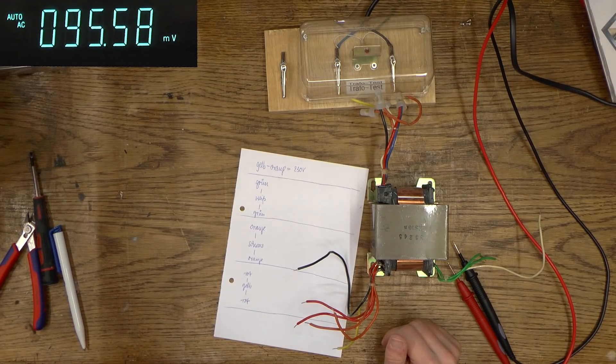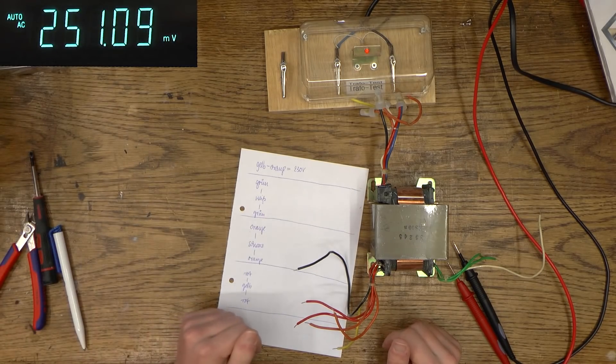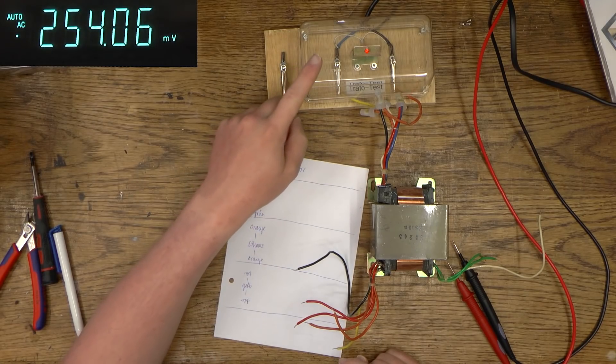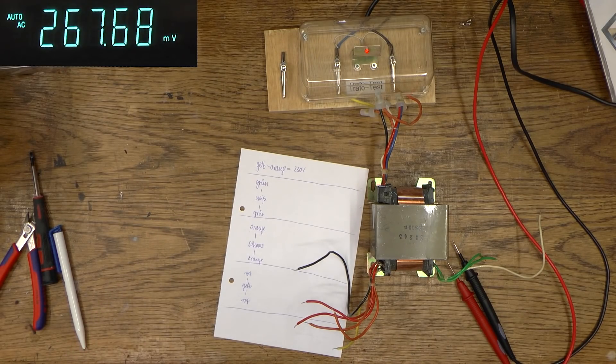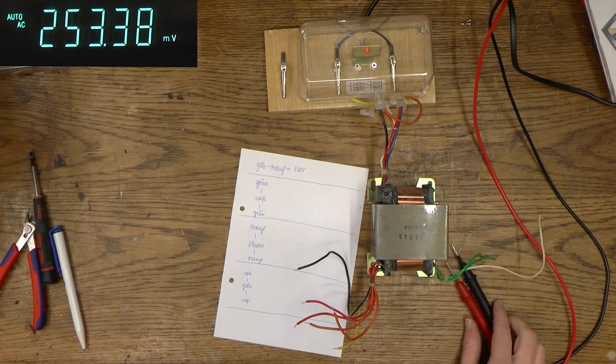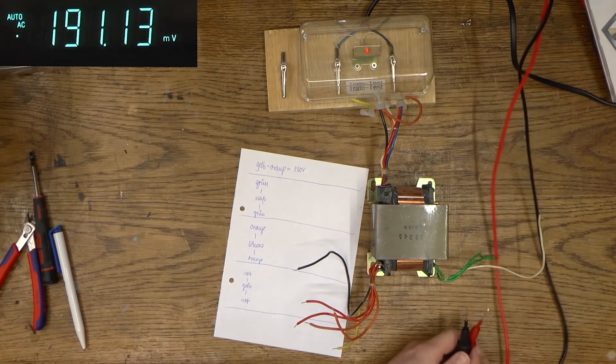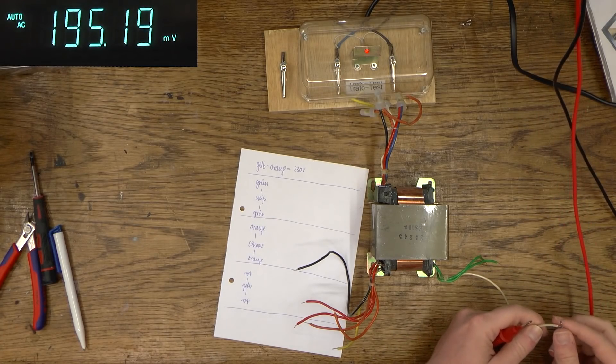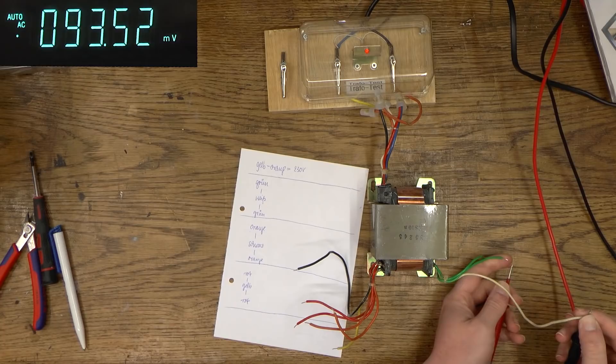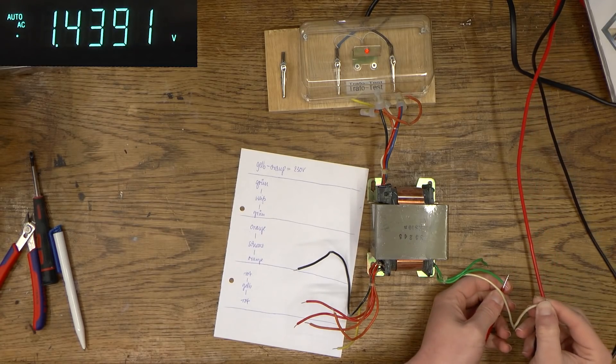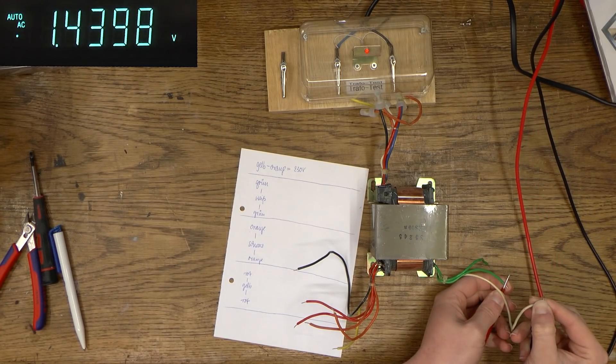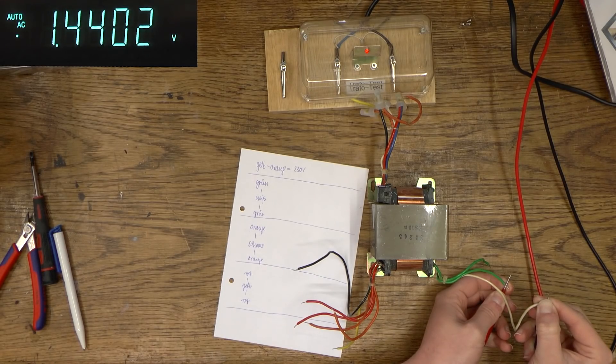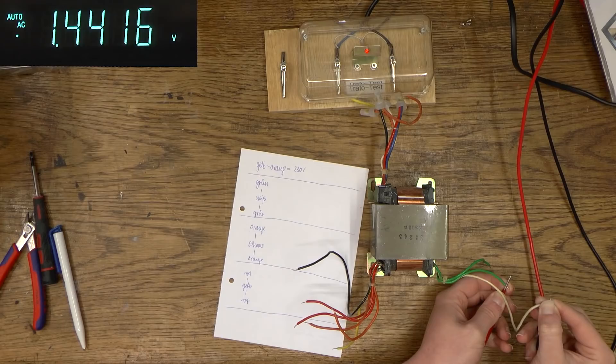So now let's apply power. Indicator light comes on and tells me that I should not take this plastic shield off. And now I'm just going to measure. I'm going to start with white and green.